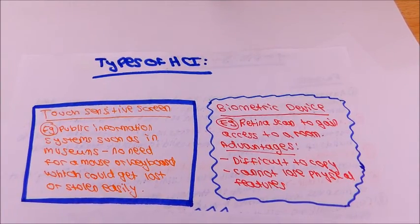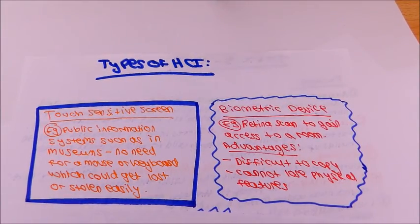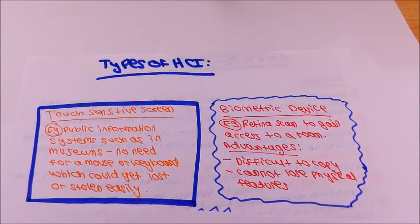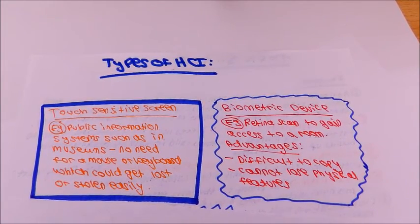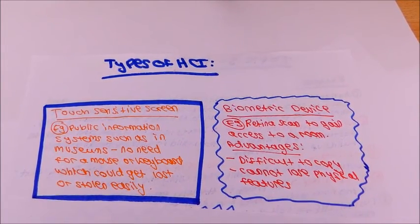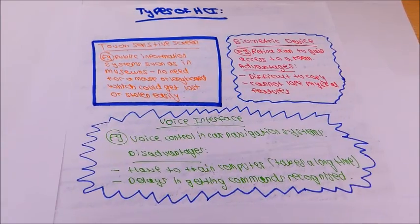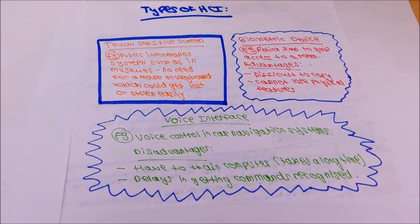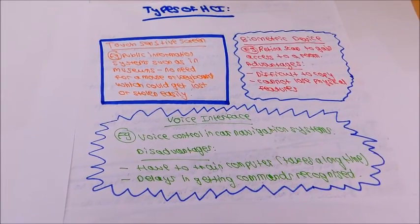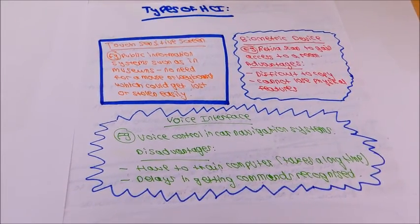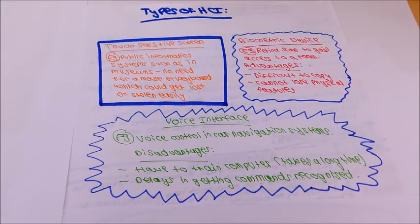Another type of HCI is a biometric device. For example, a retina scanner in order to gain access to a room. Some advantages of this are, they're difficult to copy and you cannot lose your physical features. A voice interface could be used in a car navigation system. However, you have to train the computer which takes a long time, and there may be delays in getting commands recognized.